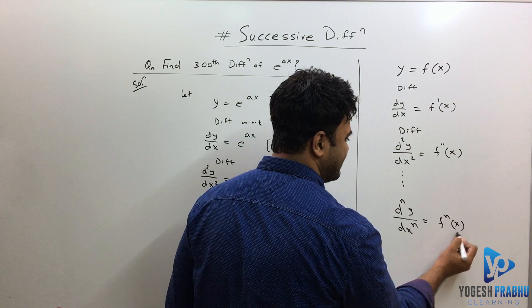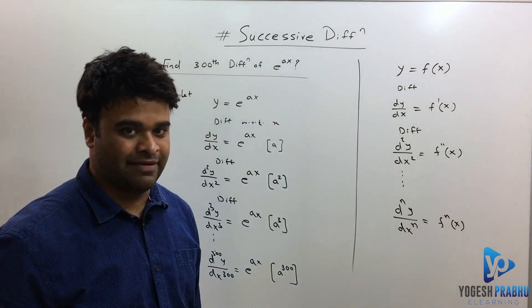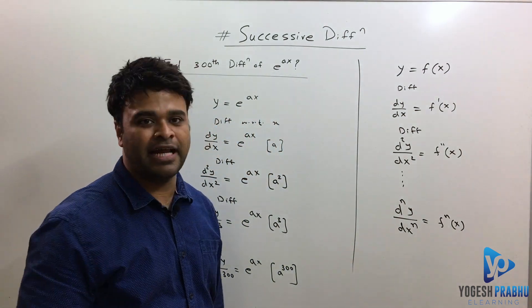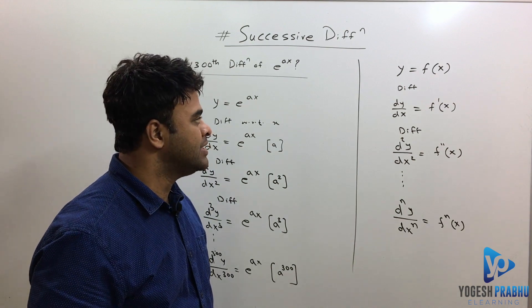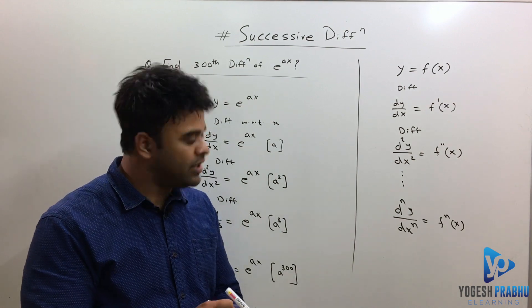And if I differentiate that nth time, that is dⁿy/dxⁿ, if I do this I will get f⁽ⁿ⁾(x). That's basically saying nth derivative. n can be any number; it has to be a whole number, not a fraction though.